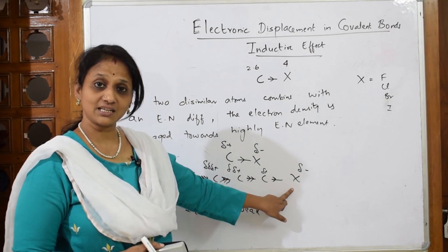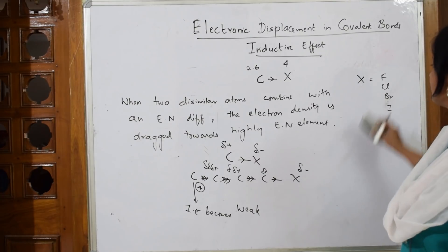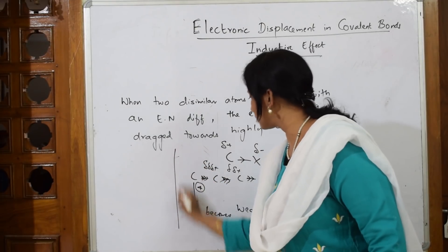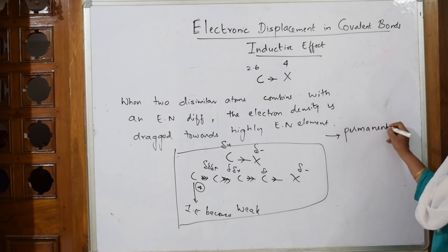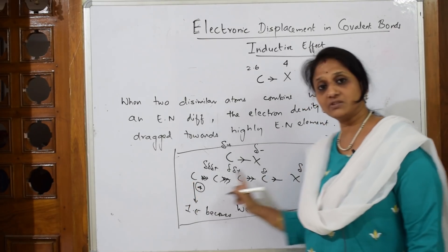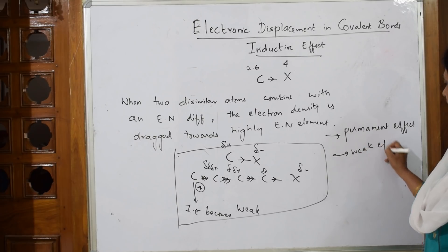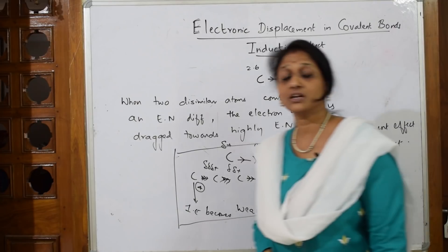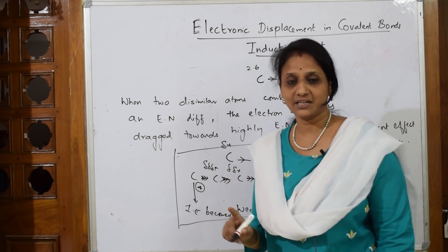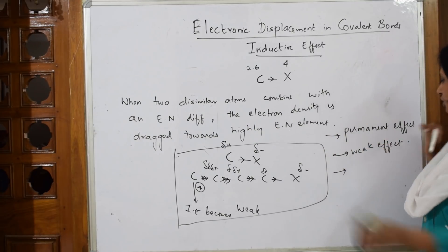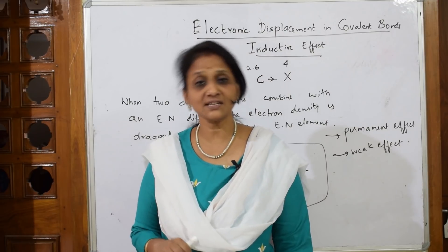Because of the electron withdrawing nature of the electronegative atom, this particular effect is called the inductive effect. Key characteristics: first, it is a permanent effect. Second, it is a weak effect — the effect diminishes as distance from C1 increases to C2, C3, C4. Third, there must be a difference in electronegativity present. The inductive effect is divided into two types: minus-I effect and plus-I effect.